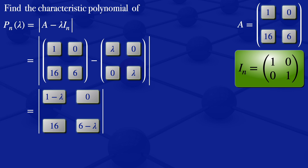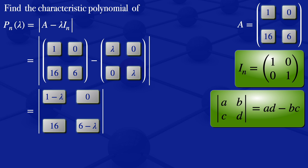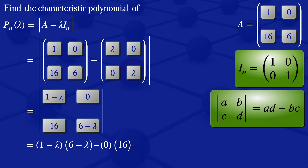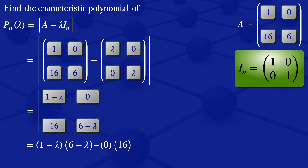We now have the determinant of a 2 by 2 matrix. For a 2 by 2 matrix with elements A, B, C, D, its determinant is AD minus BC. Using this formula, our determinant is the product of the diagonal elements minus the product of the off-diagonal elements: (1 minus lambda)(6 minus lambda) minus 0 times 16. The 0 times 16 gives us 0, so we remain with (1 minus lambda)(6 minus lambda), which simplifies to 6 minus 7 lambda plus lambda squared.